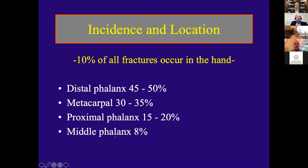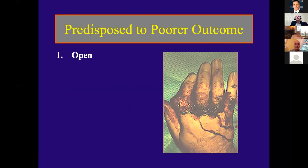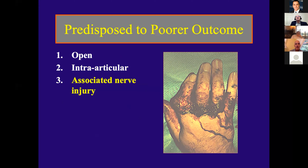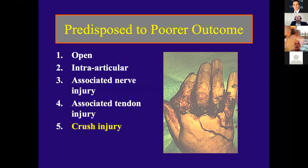Ten percent of all fractures occur in the hand. The most common is a distal phalanx fracture and the least common is the middle phalanx. Factors that predispose fractures to a poor outcome include open fractures, intra-articular fractures, fractures associated with nerve and tendon injury, and crush injuries.